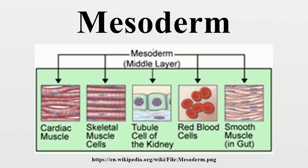Furthermore, mesoderm has the capability to induce the growth of other structures, such as the neural plate, the precursor to the nervous system. The mesoderm is one of the three germinal layers that appears in the third week of embryonic development, and it is formed through a process called gastrulation.